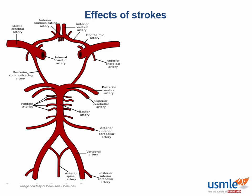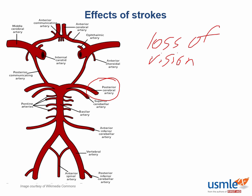For Step 1, the PCA is relatively simple. The posterior cerebral artery goes to the occipital lobe, so you have contralateral loss of vision — a hemianopsia with macular sparing.